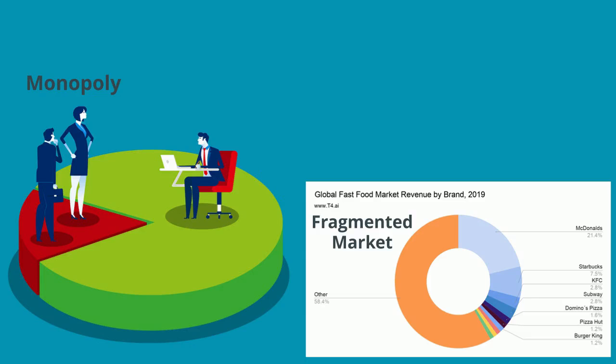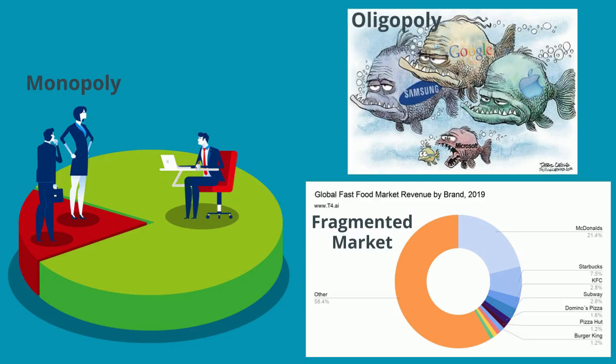A third important kind of market is called the oligopoly — when you have a small number of very large players. These markets can act like monopolies when there's tacit coordination and agreement not to compete on price, or they can be viciously price competitive with price wars that lead to serious losses.